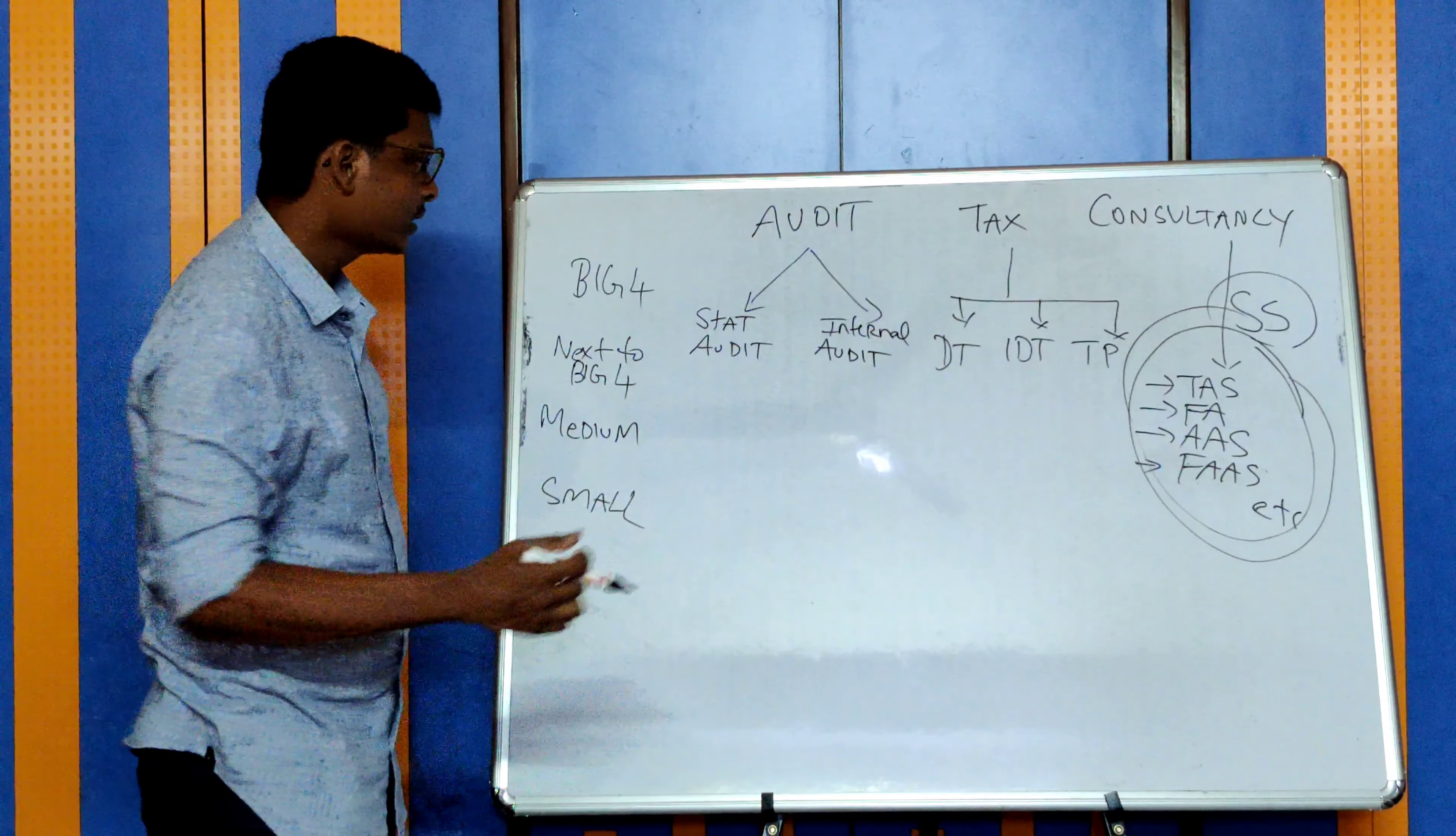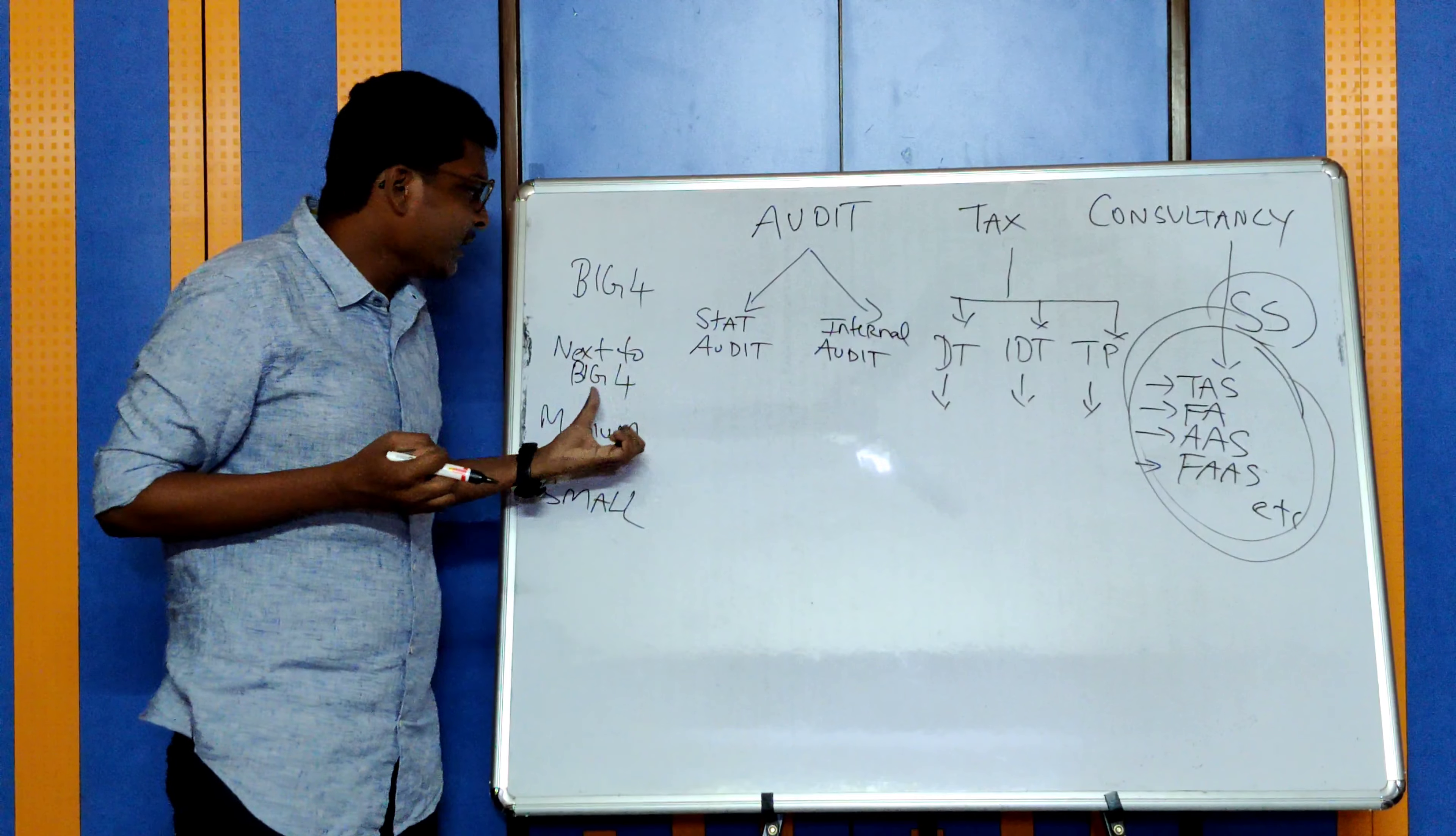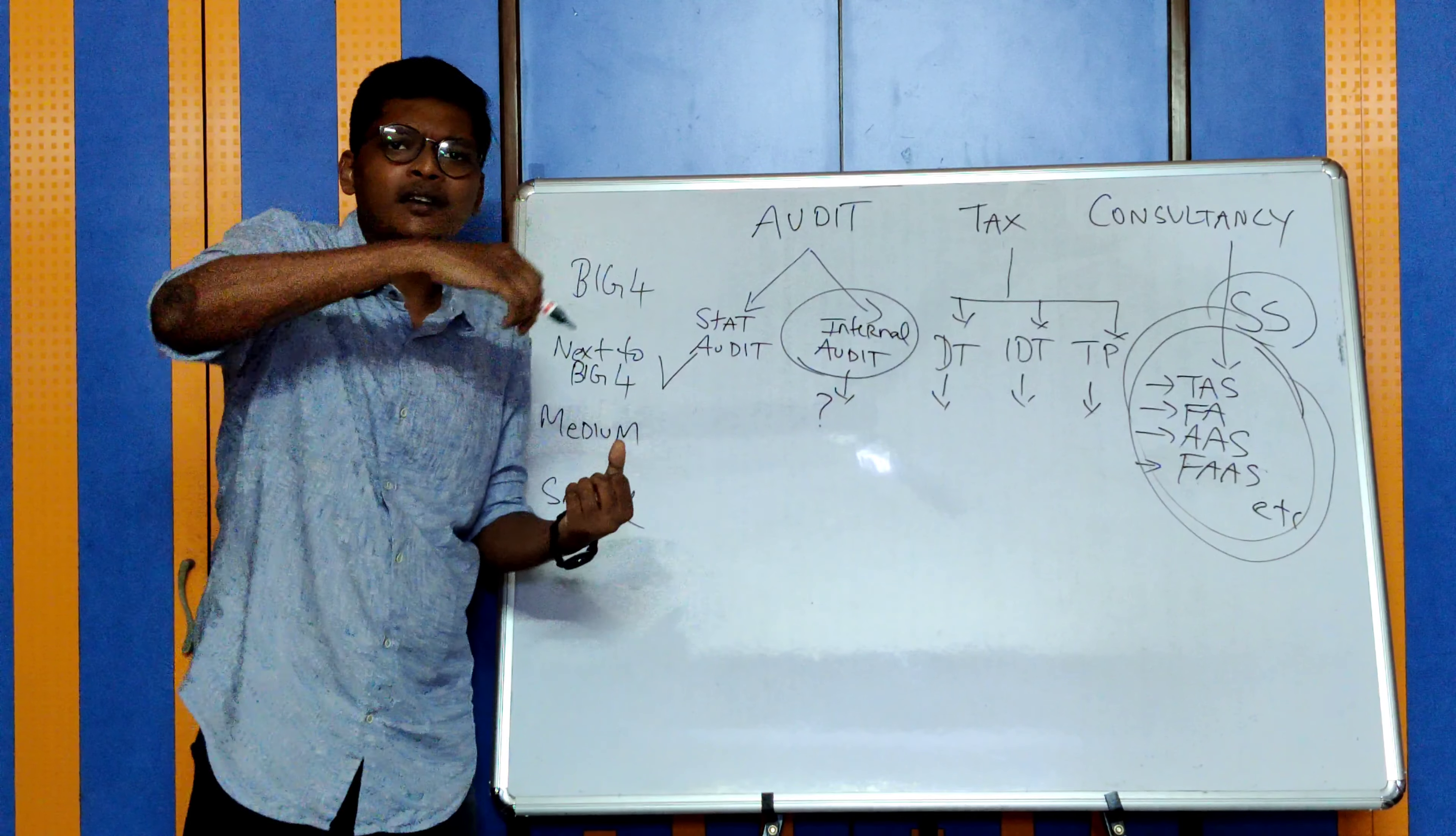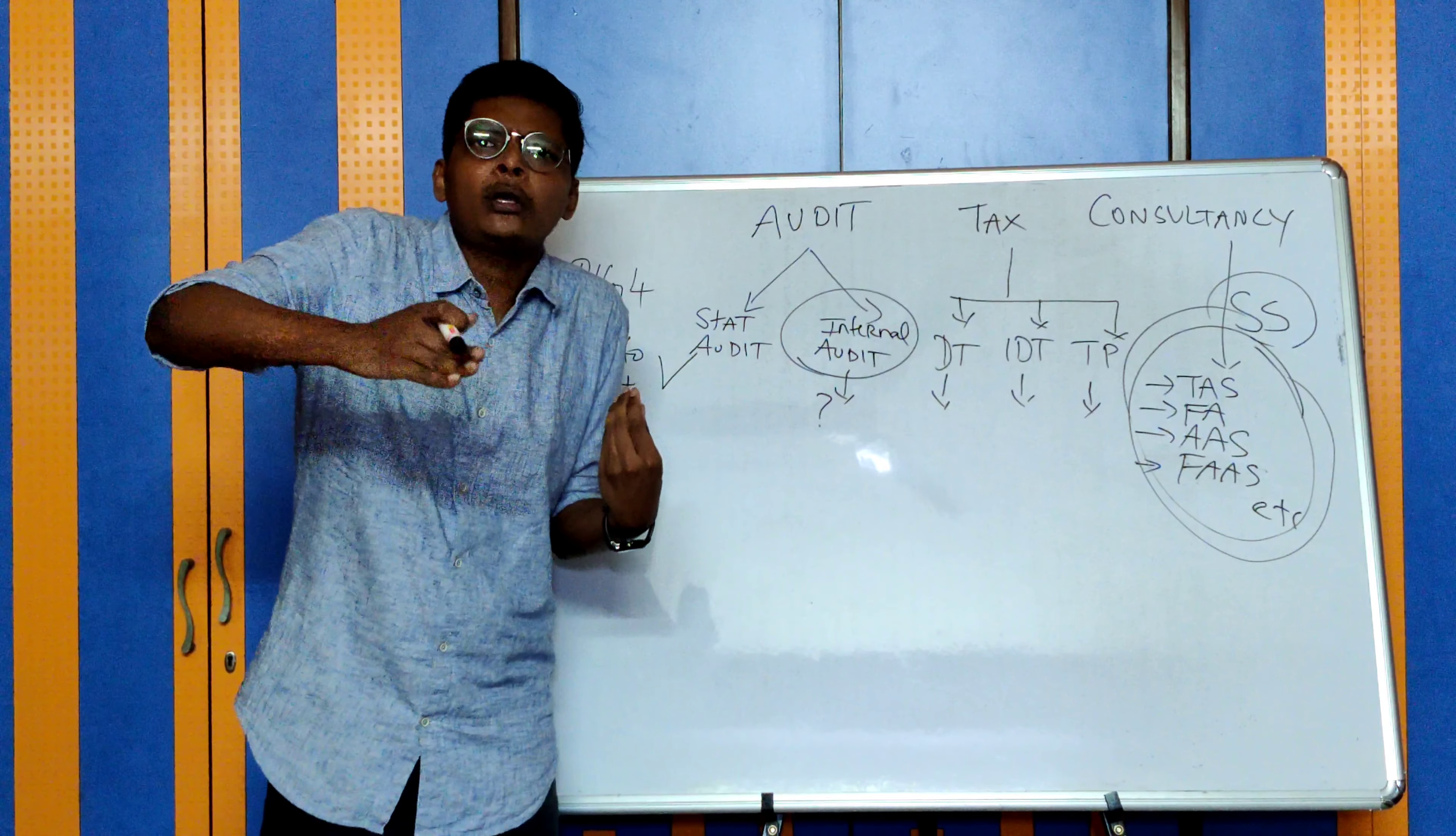Coming back to audit, major work involves statutory audit and internal audit. In statutory audit, you get overall understanding of a company, end-to-end audit. I suggest every CA should know how to do a statutory audit. Under internal audit, you learn the operations of a company, how it works, what are its controls.